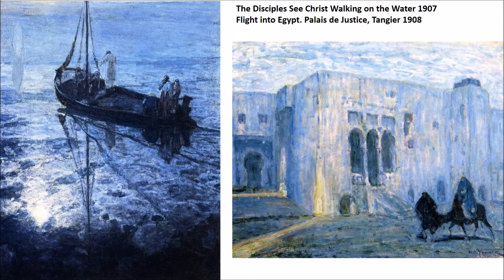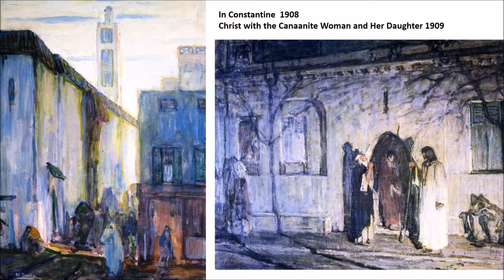Here we move more towards his abstraction, his use of color, and this impressionistic haze to create sensation and space. In Disciples Seeing Christ on the Water, you can see the figure in the distance moving forward — it's almost as if we're looking at the entire scene by moonlight. Moving forward, I think he's using these narratives as a vehicle to explore what abstraction can do to reinforce the narrative.